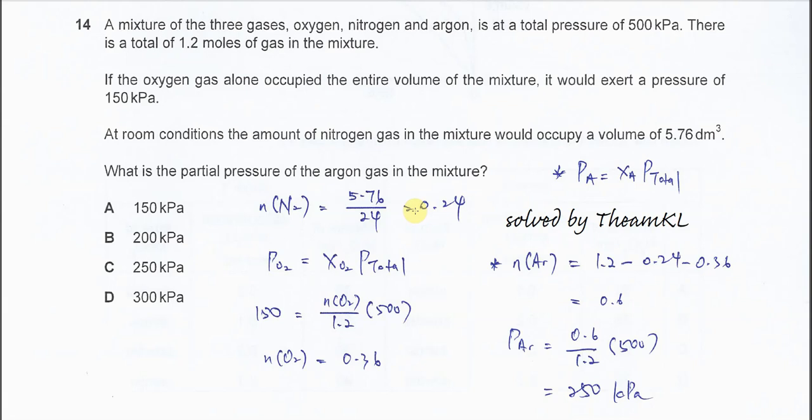Question 14. A mixture of three gases - oxygen, nitrogen and argon - is at a total pressure of 500 kilopascals. There is a total of 1.2 moles in the mixture.